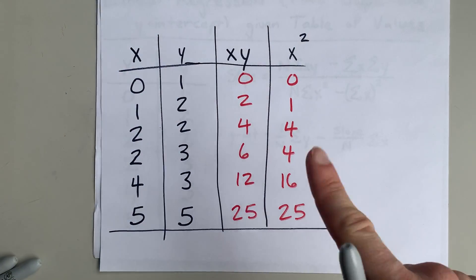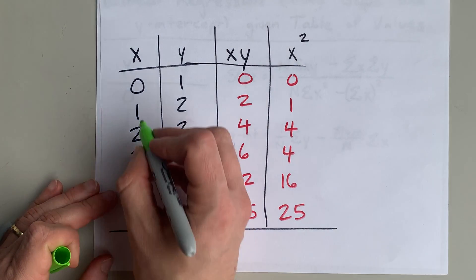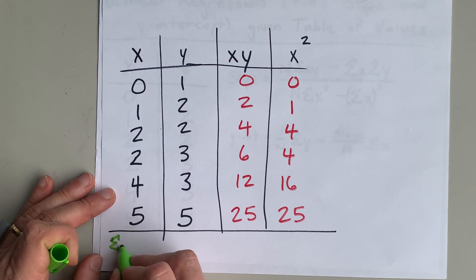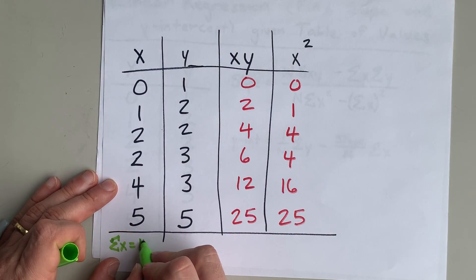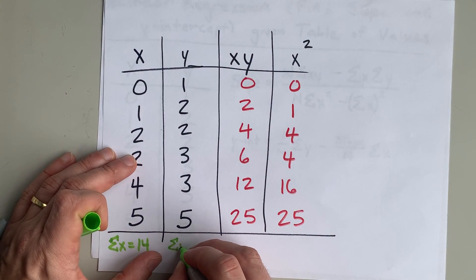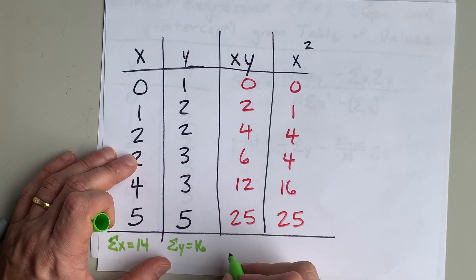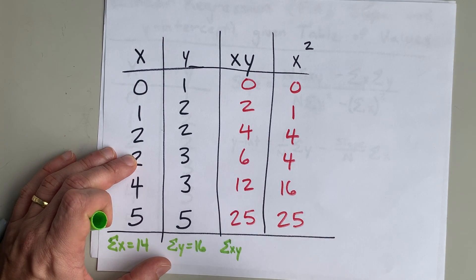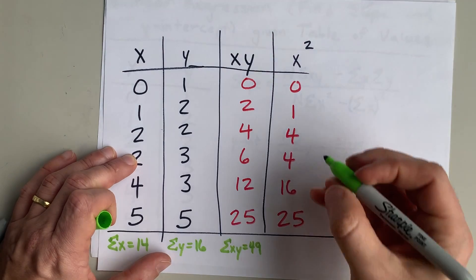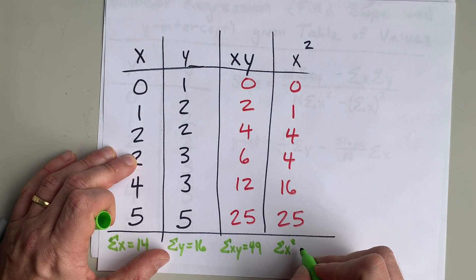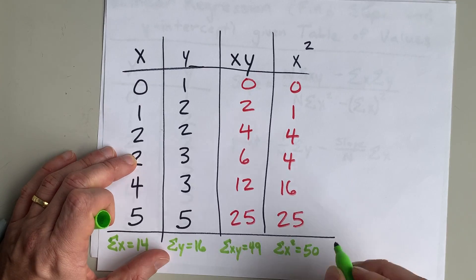Now sum each column by adding up all the values. The sum of x: 0+1+2+2+4+5 = 14. The sum of y: 1+2+2+3+3+5 = 16. The sum of x·y gives me 49. And the sum of x-squared gives me 50. Pause the video and do this for yourself as well.